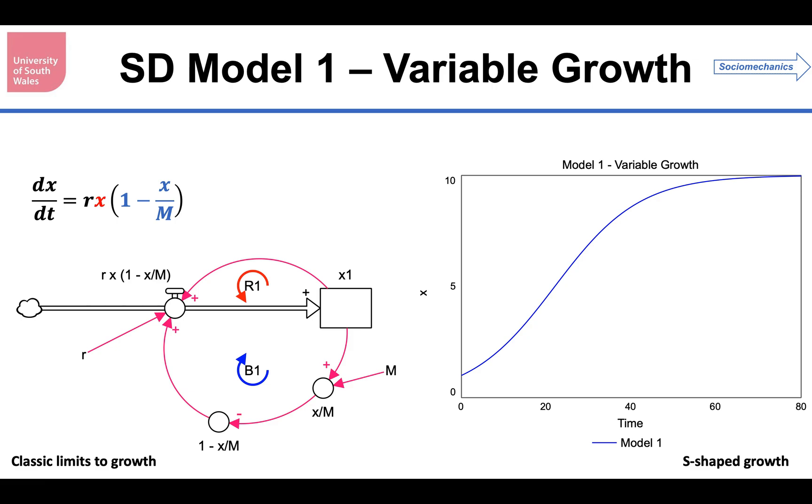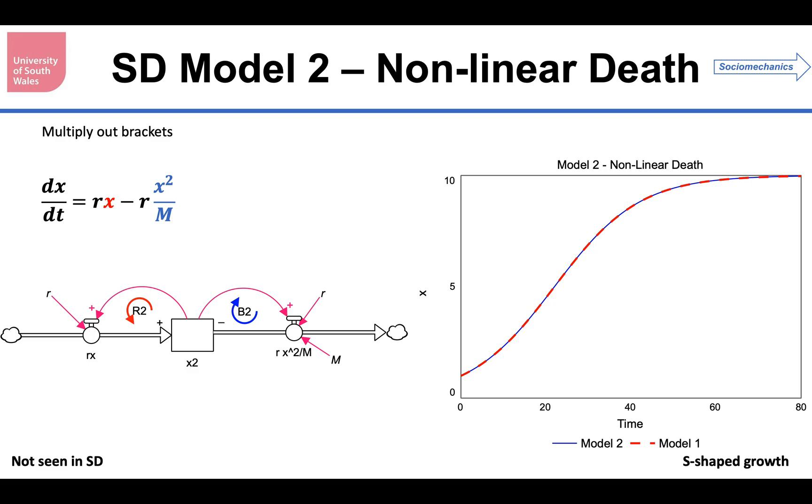But let's multiply the brackets out. Same differential equation but just expressed in a different form. Now ask ourselves, what would be the feedbacks here? What would be the flows? Well, rx is the candidate for an inflow and rx squared over m is the candidate for an outflow. So this gives us a reinforcing loop on the inflow. I've now changed my x to x2 so we can distinguish it from the previous one. And there's a balancing loop on the outflow. And because of this x squared, this is a non-linear balancing loop.